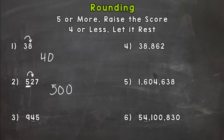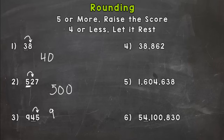Let's take a look at number three. We're rounding to the tens place — that four is underlined. We look next door and we have five or more, so we need to raise the score. We round up to 950 — that four changes to a five — and then everything to the right of the underlined digit is changed to a zero.